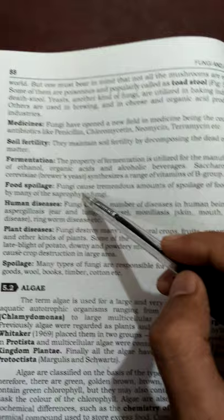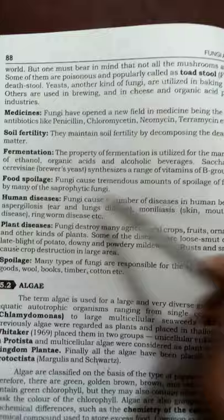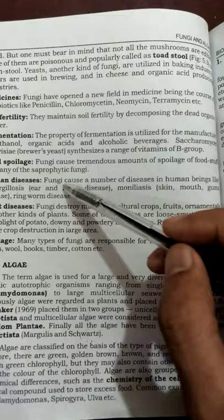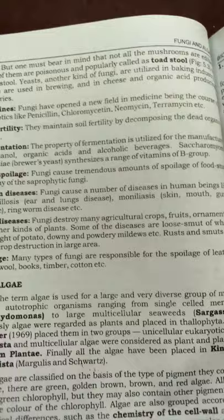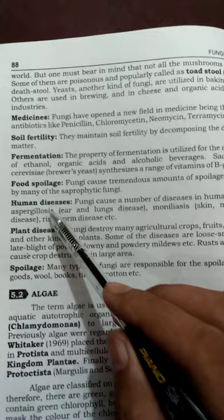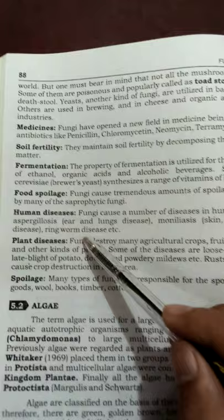Human diseases: fungi cause a number of diseases in human beings. Aspergillosis is a disease of the ears and lungs caused by fungi. Moniliasis causes diseases of the skin, mouth, and gums. Ringworm disease creates round circular marks on the body — this is also caused by fungi. In plant diseases, fungi destroy many agricultural crops, fruits, ornamentals, and other kinds of plants. Some diseases include loose smut of wheat, late blight of potato, downy and powdery mildews.